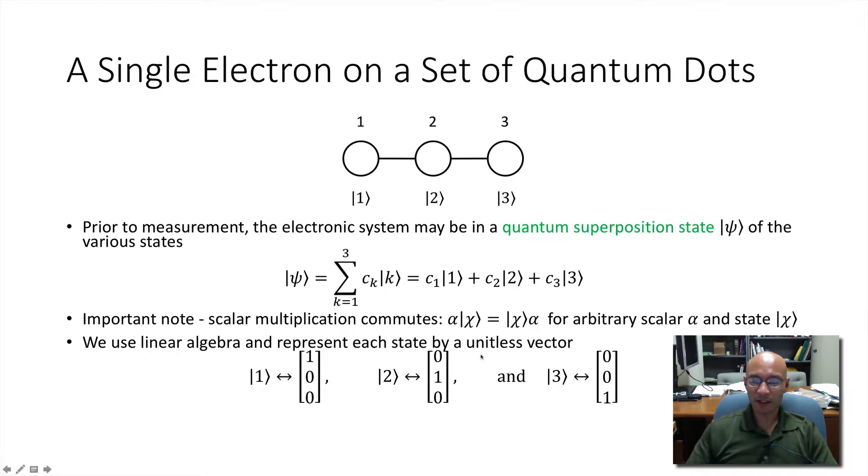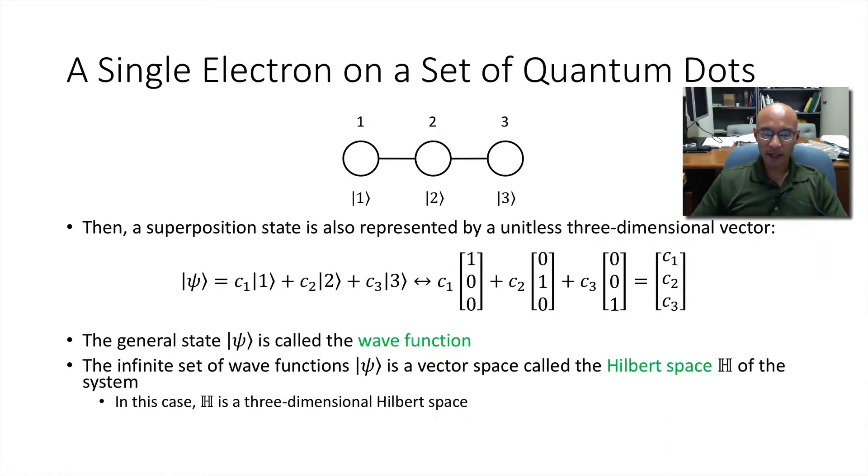So if you had some scalar alpha times a Ket psi, you could reverse them and it's exactly the same. And I should point out that these C's are complex numbers. Now we can use linear algebra and represent each state by a unitless vector. So the one state gets this one zero zero vector, the two state gets the zero one zero and the three gets the zero zero one. And then that means we can also represent our arbitrary state psi as a three element vector.